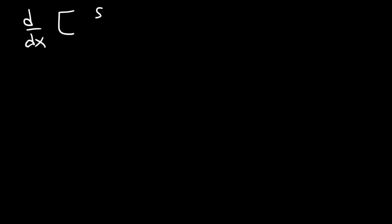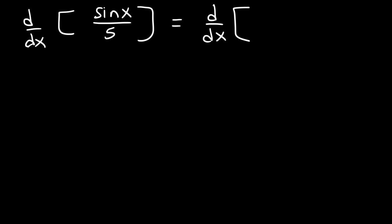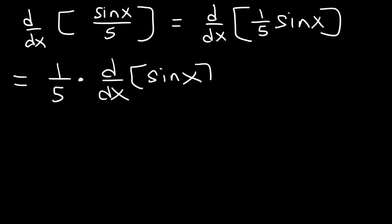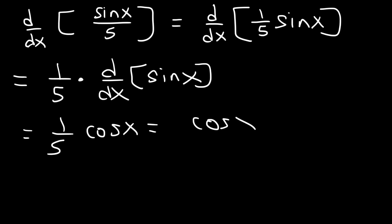Now let's find the derivative of sine x divided by 5. The first thing I recommend is rewriting the expression: sine x over 5 is basically one-fifth times sine x. Using the constant multiple rule, it's one-fifth times the derivative of sine x. The derivative of sine is cosine, so the answer is one-fifth cosine x, or cosine x divided by 5.